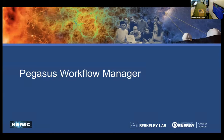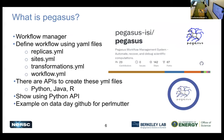The Pegasus workflow manager defines its workflows in a couple of different YAML files: the replicas, sites, transforms, and workflow. There are a couple of different APIs you can use to build up these YAML files - you can either build them yourself or use one of these APIs. I'm going to be showing off the Python API, and we also have an example of this on the NERSC day-to-day GitHub page that I have working for Perlmutter, with install instructions and instructions on running it.